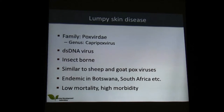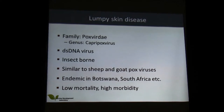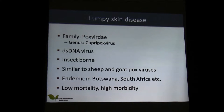Lumpy skin disease is a virus from the Poxviridae family, genus Capripoxvirus. It is also a double-stranded virus. It is spread by biting insects, mosquitoes, and flies, and it is very similar serologically to sheep and goat pox virus. The disease is endemic in Botswana, South Africa, and basically Africa in general.